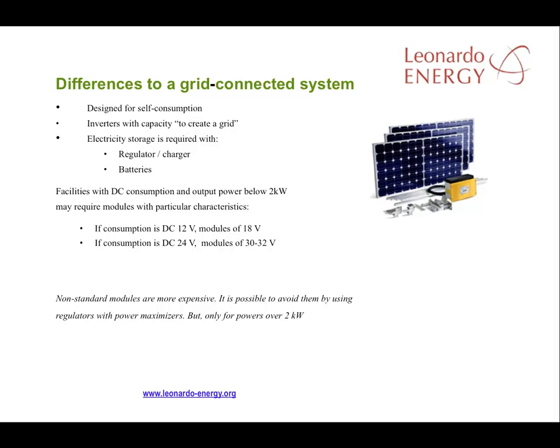And finally, where the required consumption is less than 2 kilowatts, modules with special characteristics may be required. In these types of installation, 12-volt DC modules are used that in fact produce a voltage of 18 volts. Normally, modules produce a voltage of 30 to 32 volts. Because the lower voltage modules are less common, they are more expensive, but there may be some cost savings if regulators with power maximizers are not required. Module manufacturers may provide advice on what is most profitable for a particular project.